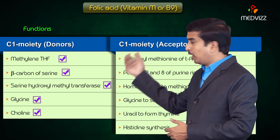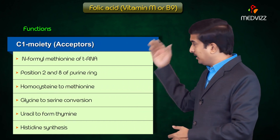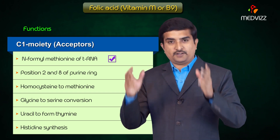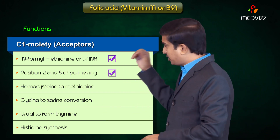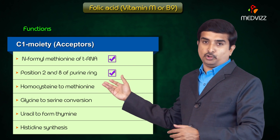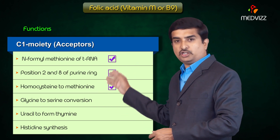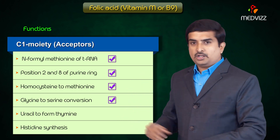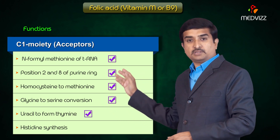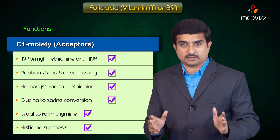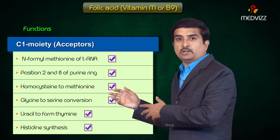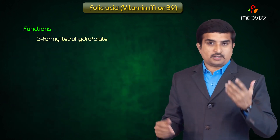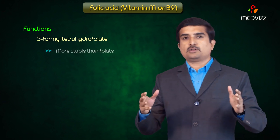The C1 moiety acceptors are as follows: formyl-methionine of tRNA, positions 2 and 8 of the purine ring, homocysteine to methionine conversion, glycine to serine conversion, uracil to thymine conversion, and histidine synthesis — all reactions where folic acid is involved as a one-carbon acceptor.